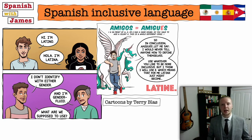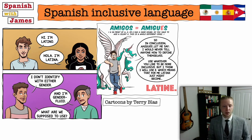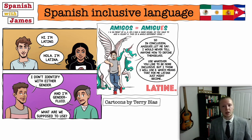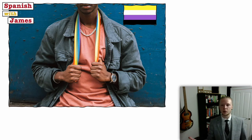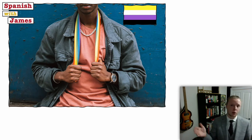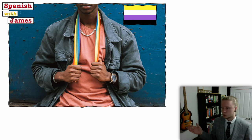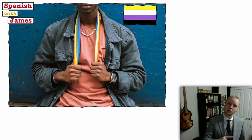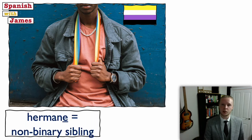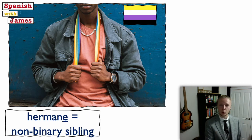For example, amigos would become amigas with the E ending for non-binary usage. If a person identifies as non-binary and we want to refer to them as a sibling — in English we have the lovely gender-neutral word 'sibling' — in Spanish instead of hermano or hermana, we could say hermane using that E ending.